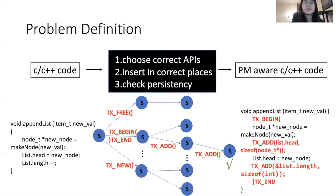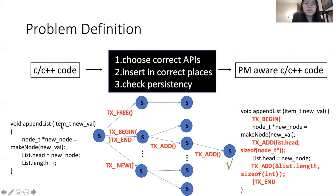Here we show what the problem looks like. Suppose the user only knows how to write volatile C/C++ code, and also knows which data structure should be stored in persistent memory. So the input is a piece of pure C/C++ volatile source code and the assigned data structure, and the output is the corresponding persist-memory-aware C/C++ code with the desired and safe control on the target data structure, after adding some APIs.